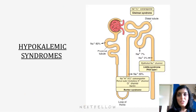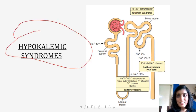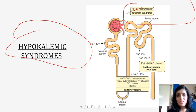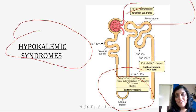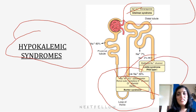You need to know the names of certain hypokalemic syndromes. Gitelman syndrome is a defect in the sodium chloride co-transporter. Bartter syndrome produces a situation similar to loop diuretics — it is a defect in the sodium-potassium-chloride co-transporter, renal outer medullary potassium channel, and potassium-chloride channel. Liddle syndrome is a defect in epithelial sodium channels. These are the hypokalemic syndromes you need to know for your exams.